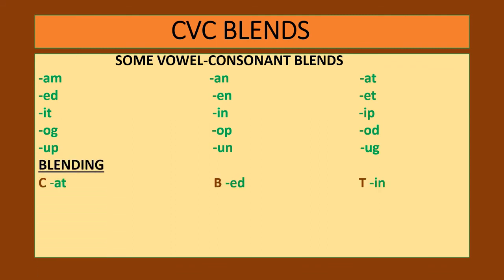These blends can be combined with different consonants to give us words like: cat (CVC), bed, cup, and mug.